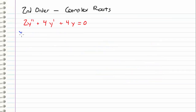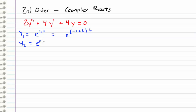Let's go ahead and write out our first solution associated with the first root, which comes out to be e to the r1 times t. We said that r1 was negative 1 plus i, so y1 equals e to the negative 1 plus i times t. And then let's write an expression for y2, which was e to the r2 times t. So this is going to be equal to e to the negative 1 minus i times t. So we have our two solutions y1 and y2, associated with r1 and r2 respectively.